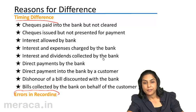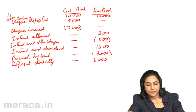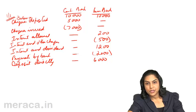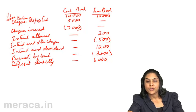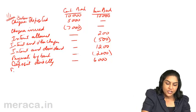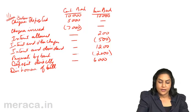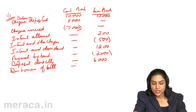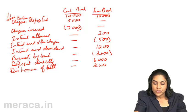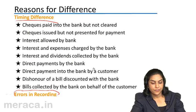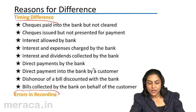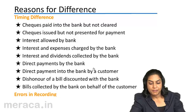Dishonour of a bill discounted with the bank: a bill was discounted with the bank, we recorded it in our books and the bank recorded it in its books. However, there was a dishonour and we do not know about it. The bank has debited our account on account of this dishonour — let us assume this is 2,000. Bills collected by the bank on behalf of the customer also result in money coming in to the passbook.